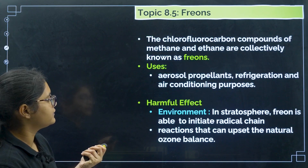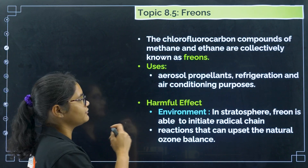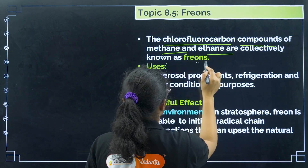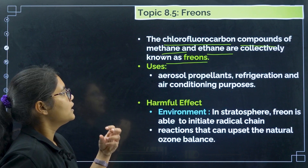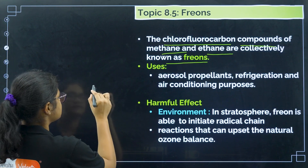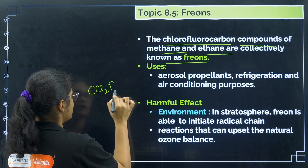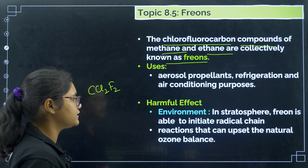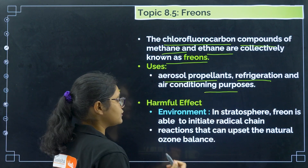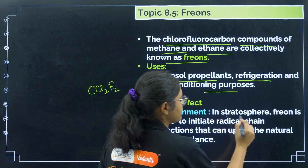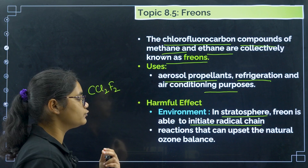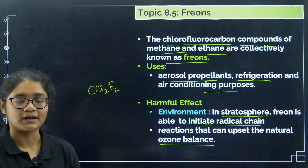Next is freons. The definition: chlorofluorocarbon compounds of methane and ethane are collectively known as freons. For example, CCl₂F₂ — where both chloro and fluoro carbons are present — is called a freon. Generally, freons are used for aerosol propellants, refrigeration, and air conditioning. They are also harmful to the environment: once they reach the stratosphere, they initiate radical chain reactions which cause ozone depletion.